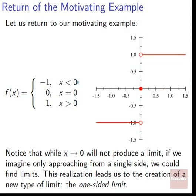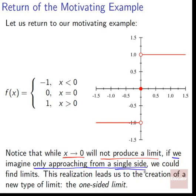Let us return to our motivating example now that we have the notion of continuity. Back to our piecewise function: negative 1 when x is less than 0, 0 when x equals 0, and 1 when x is greater than 0. As we approach 0, we totally don't have a limit, because they don't agree — both sides have to agree. However, if we were to imagine only approaching from a single side, all of a sudden it starts to work. We could find limits. This realization leads us to the creation of a new type of limit: the one-sided limit. If we approach only from the negative side, it's clear that we're headed to negative 1. If we approach only from the positive side, it's clear that we'd be headed to positive 1.